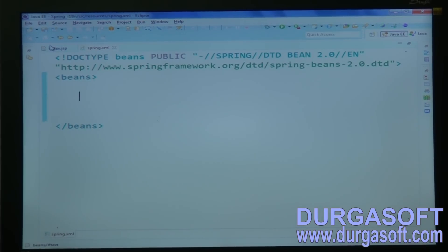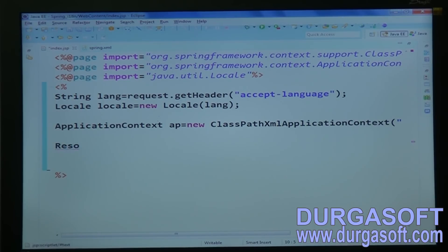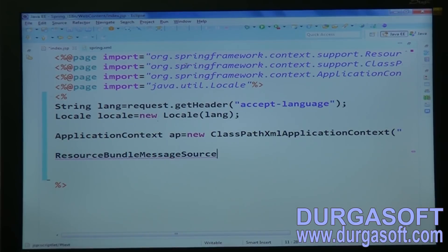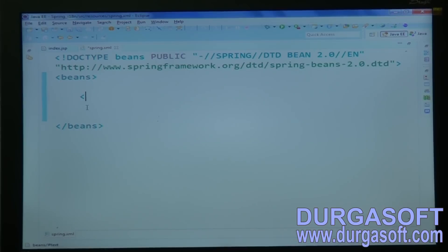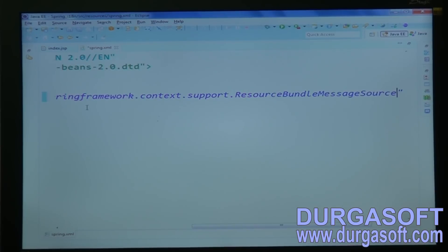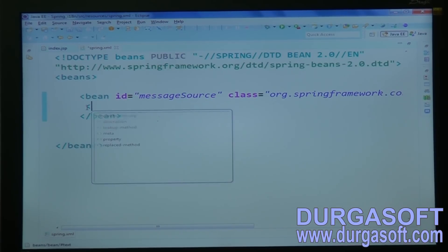So to configure base name, which class we have to use here? The class name is resource bundle message source. And in this class, we have one setter method. Set base name. So create resource bundle message source class object here. And the ID should be message source. And that class name, resource bundle message source. And in this class, we have one setter method. Property name, base name. Our properties file base name value only, we have to pass here. Data.